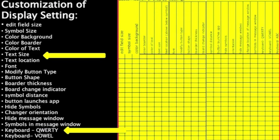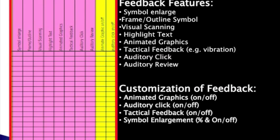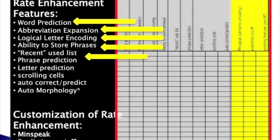Customization of display settings includes changing the text size, possibly bigger, and having a QWERTY keyboard. Feedback features weren't important in this case — she didn't need symbols to enlarge or have an auditory click. Rate enhancement was huge in this case. Nancy wanted word prediction, abbreviation expansion, logical letter encoding, the ability to store phrases, and a recently used list — all to enhance communication.